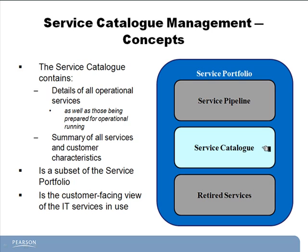The Service Catalog is a list of the dishes that are being offered today. It also contains services that are being prepared for operational running. Think of these services like the turkey that's in the oven right now, but it won't be ready for another three hours. It's ready enough to be on the menu, but it's not quite ready enough to make it to your plate yet.